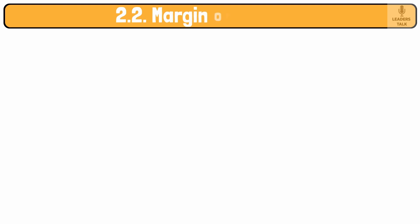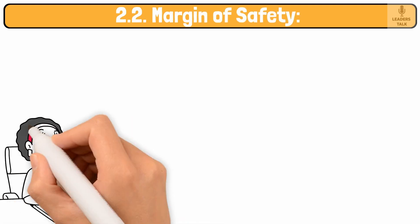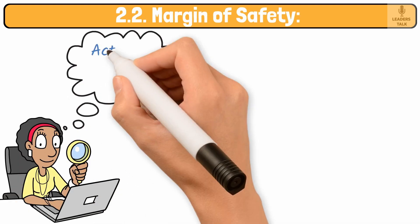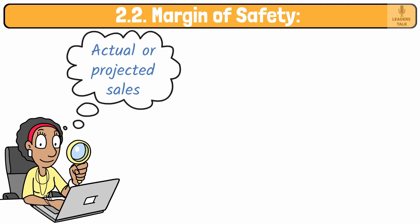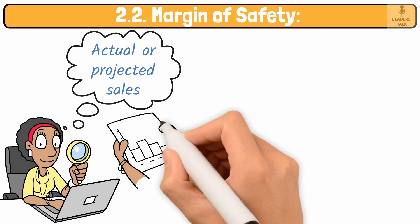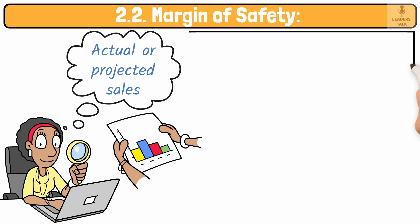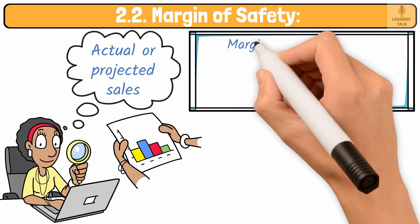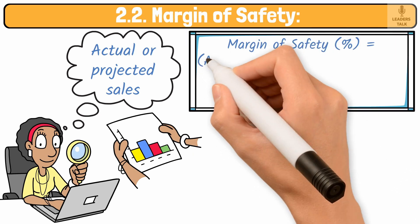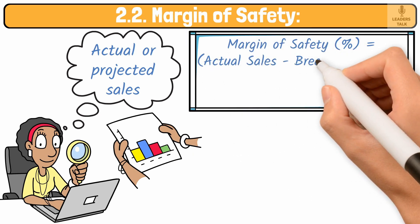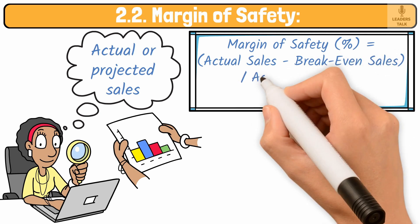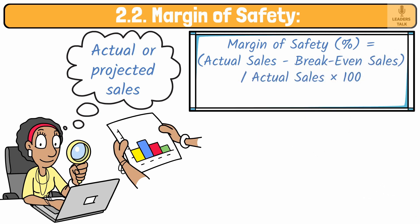Margin of safety. The margin of safety (MOS) measures the extent by which actual or projected sales exceed the breakeven sales. It indicates how much sales can drop before the business starts incurring a loss. Margin of safety percent equals actual sales minus breakeven sales divided by actual sales into 100.